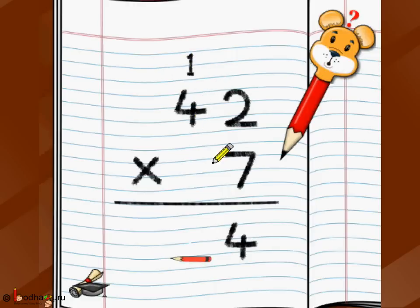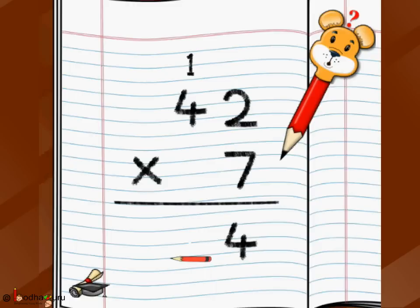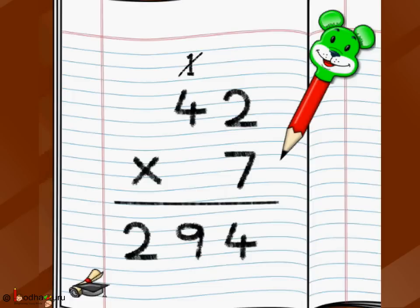We write the carry of one smaller so we are not confused. So from fourteen, we write four here and carry one. Now we multiply seven by four — don't look at the carry while multiplying, we add it after. Seven fours are twenty-eight, plus one carry-over is twenty-nine. We write the ones digit nine here and carry two to the next position. But there is no further digit, so we write the two back here. So forty-two multiply by seven is equal to two hundred and ninety-four.